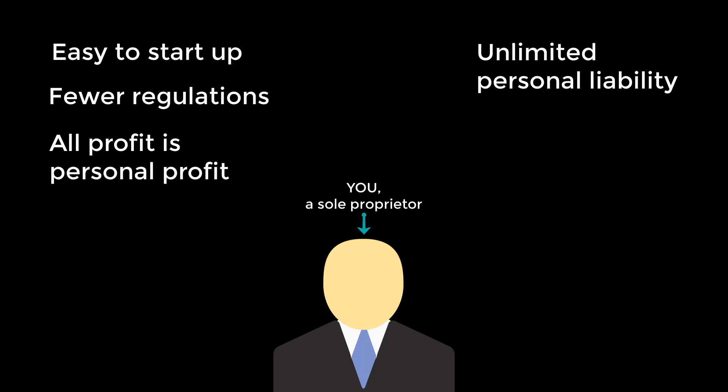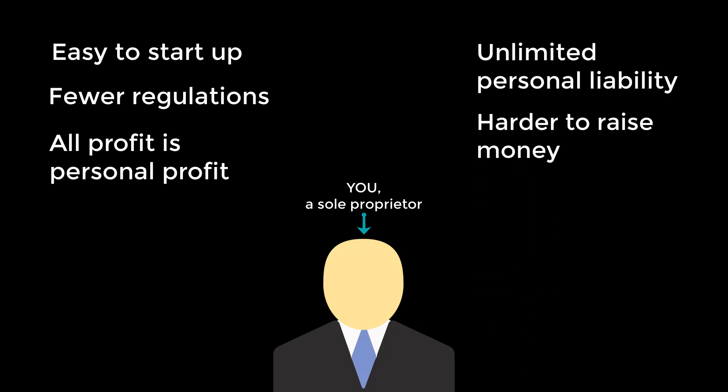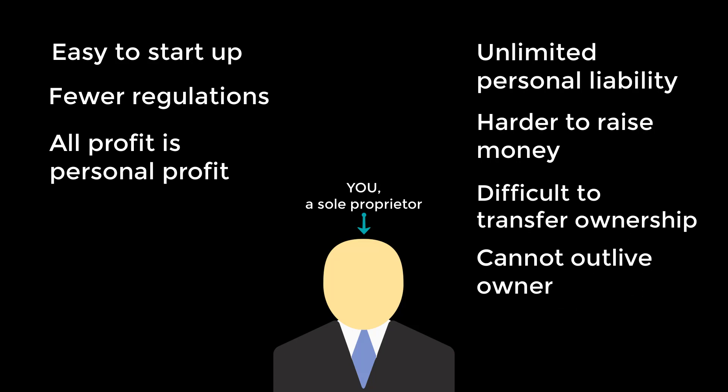For example, if a defective Widget 9000 injures a customer, the customer has to sue you personally, and if they win, the money comes out of your bank account. Also, it's tough to get people to give you money personally unless you've got a stellar track record. Even with a really good business plan and product, your chances of making it big are slim. And if you've got dreams of a business empire, you can't do that as a sole proprietor either — a sole proprietorship ends when you stop doing business or stop living.